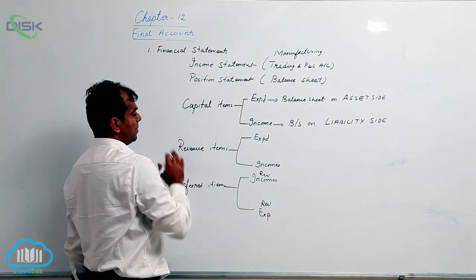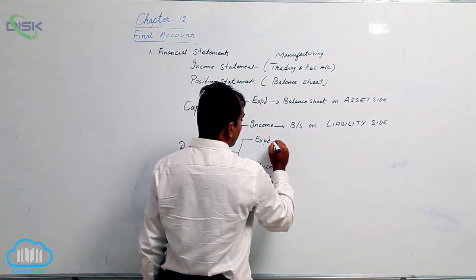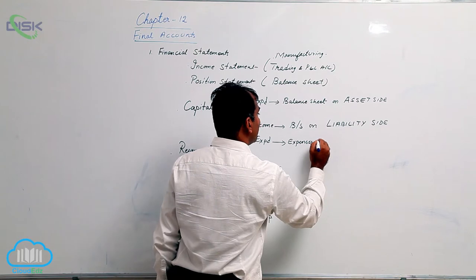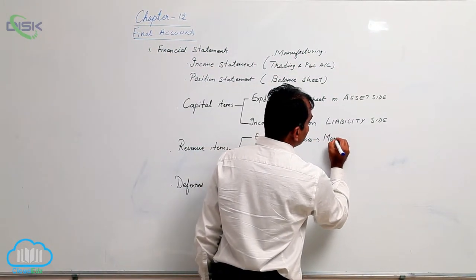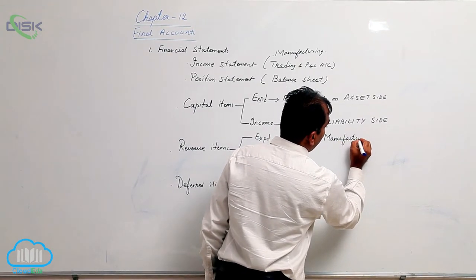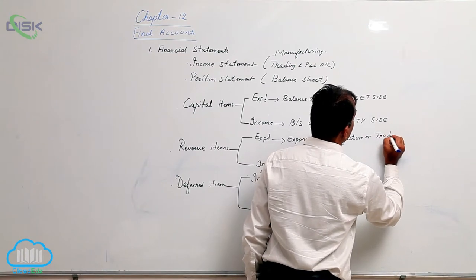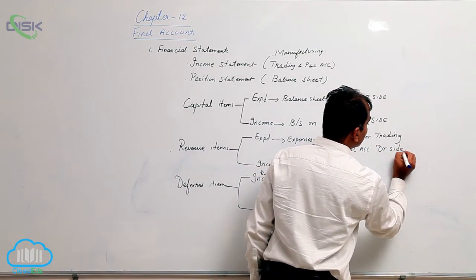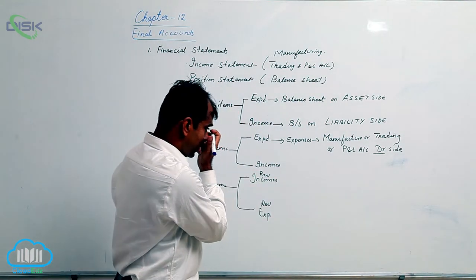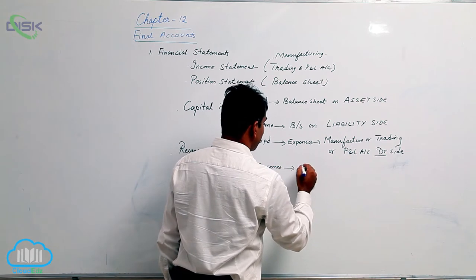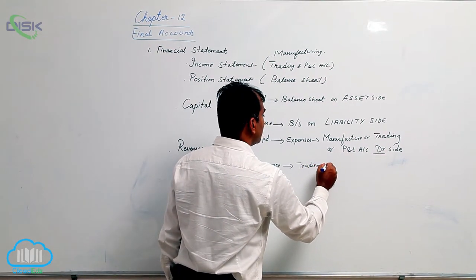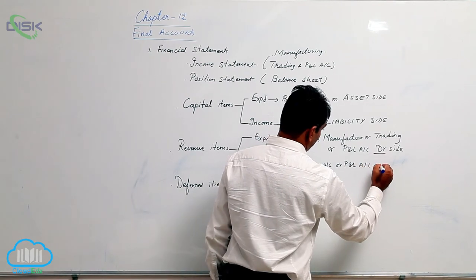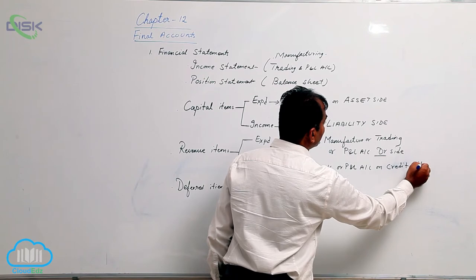Coming to revenue items: revenue expenses are taken in the manufacturing account, trading account, or P&L account on the debit side, because the rule is to debit all expenses and losses. When it is a revenue income, it is taken in the trading or P&L account on the credit side.